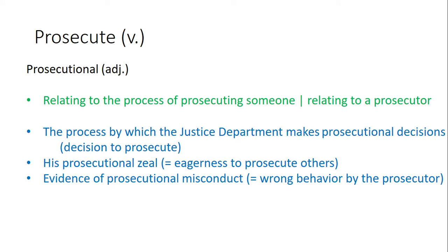Prosecutorial is an adjective form of prosecute and it relates to the process of prosecuting someone or to a prosecutor. Examples: Number one, the process by which the Justice Department makes prosecutorial decisions — decisions made to prosecute. Number two, his prosecutorial zeal, meaning eagerness to prosecute others. Number three, evidence of prosecutorial misconduct — wrong behavior by the prosecutor.